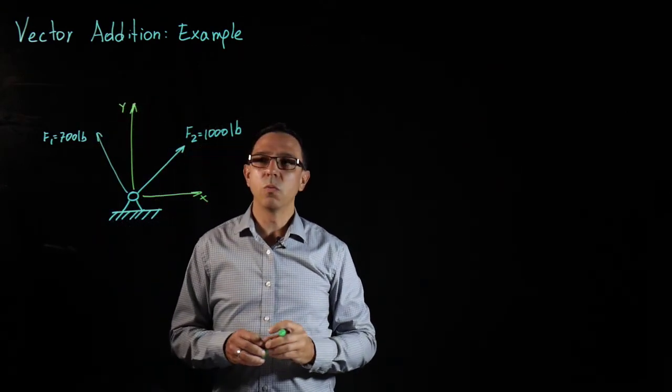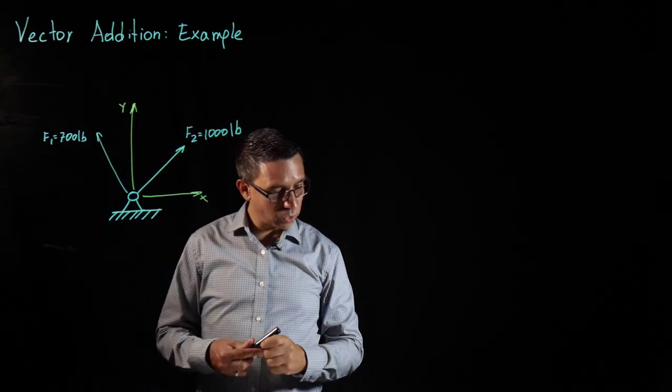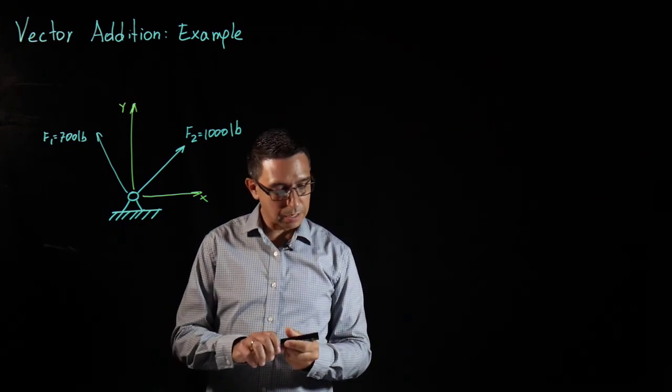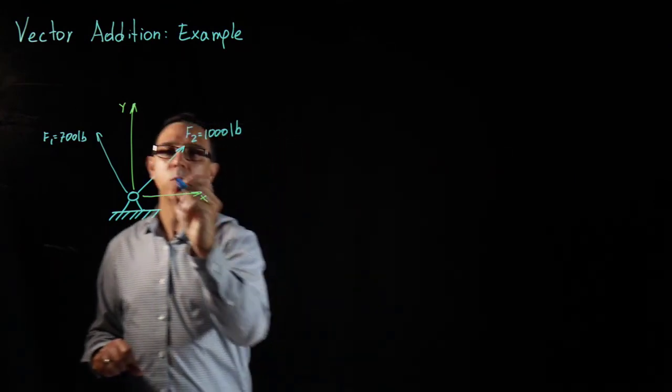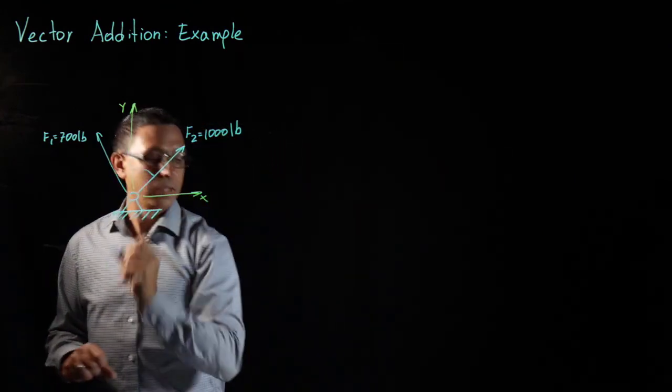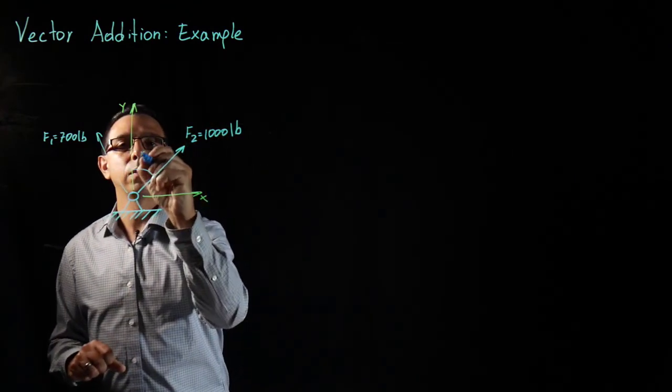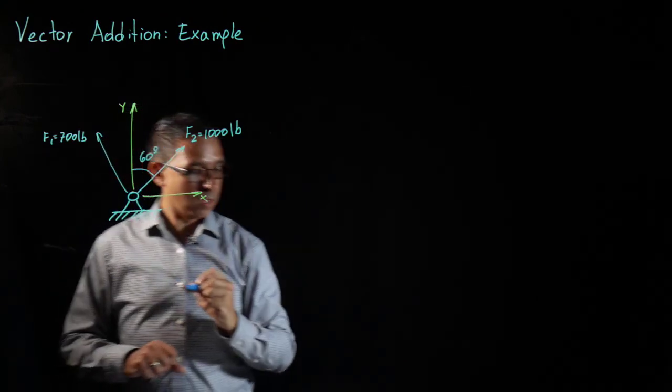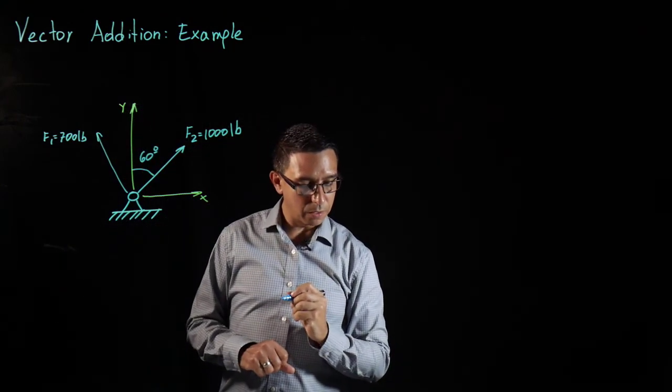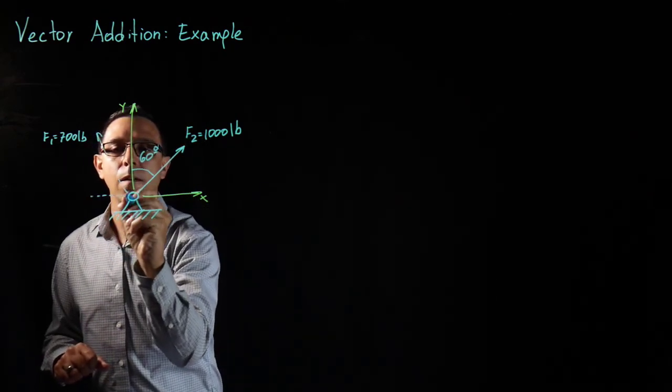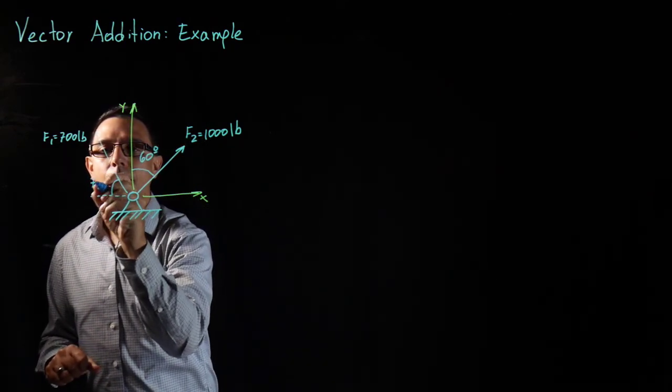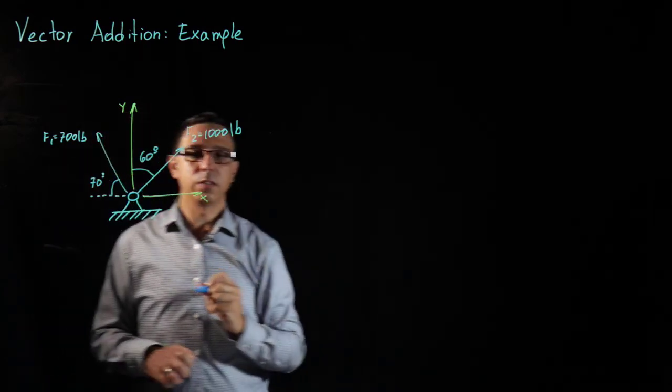And what we're going to see is that the direction of those forces are such that the angle between F2 and the vertical, this is 60 degrees. And the angle of F1 and the horizontal is 70 degrees.